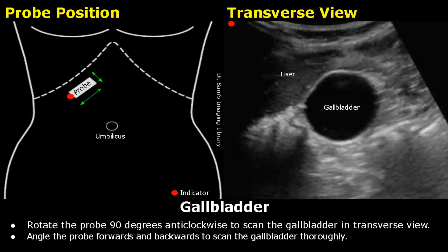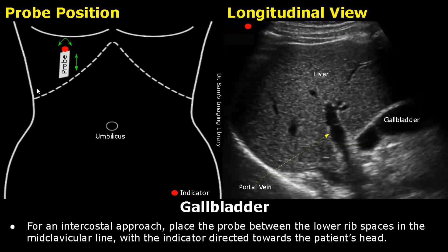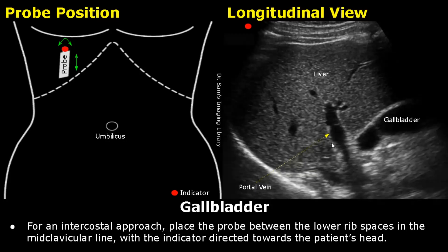You can also use an intercostal approach to view the gallbladder. Place the probe between the lower rib spaces in the mid-clavicular line with the indicator directed towards the patient's head, and you will get this type of image. Rib shadows are seen here and here. This is the right lobe of the liver, and the gallbladder is seen inferiorly at the right side of the image. This is the portal vein with hyperechoic borders.